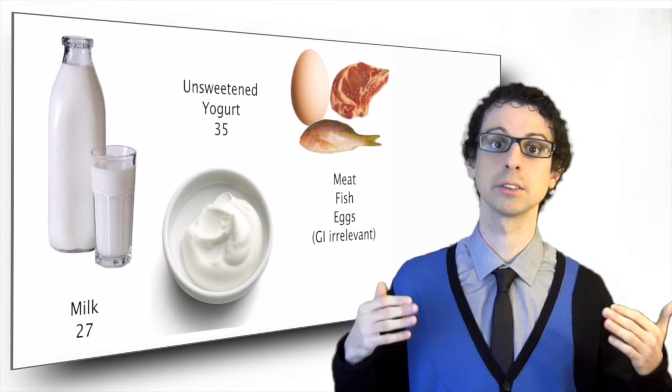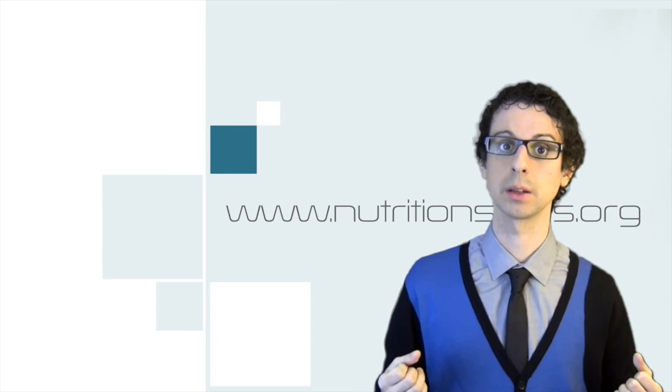Milk and dairy have a relatively low glycemic index. The GI of meat, fish and eggs is irrelevant because they do not contain significant amounts of carbs.